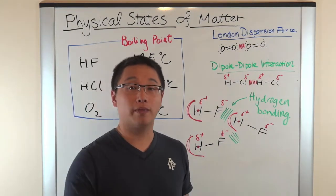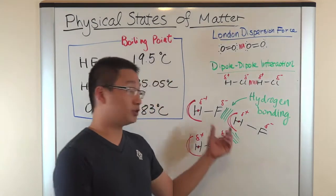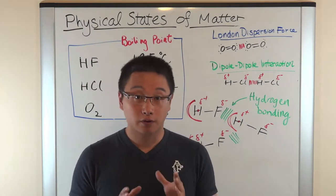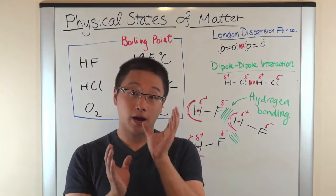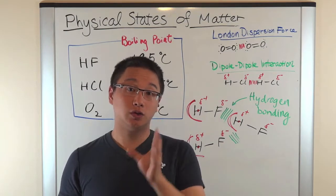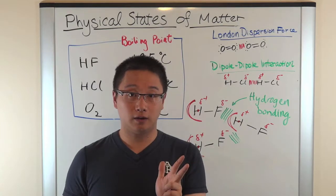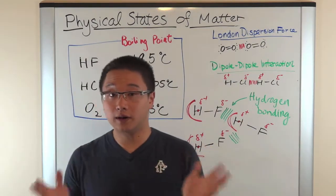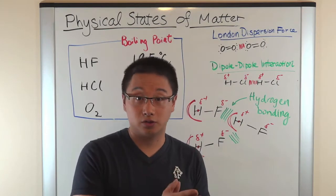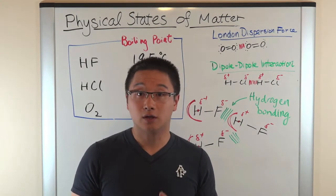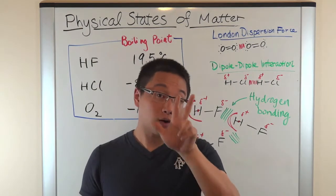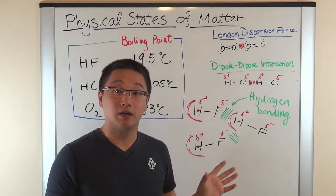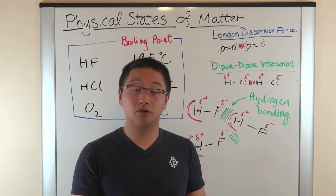When do we see hydrogen bonding? There are two requirements. The first requirement is that within a molecule, the hydrogen must be covalently bonded to either nitrogen, oxygen, or fluorine. Why these three elements? Because fluorine, oxygen, and nitrogen are very small and very electronegative. When hydrogen is bonded with one of these three elements, it makes the proton of the hydrogen very easily exposed to the outside environment, making it susceptible to attraction.